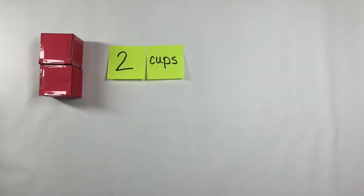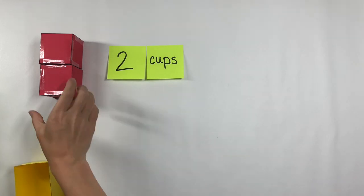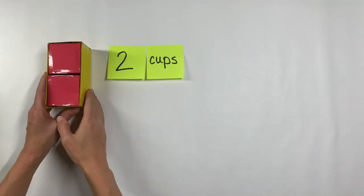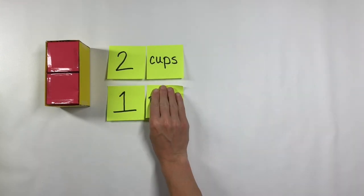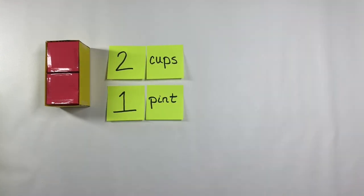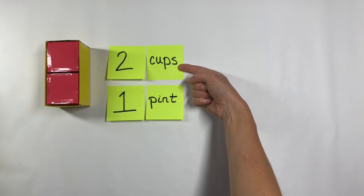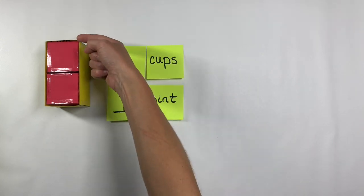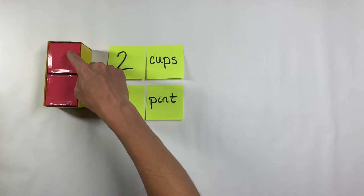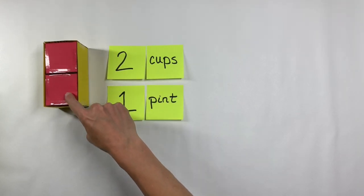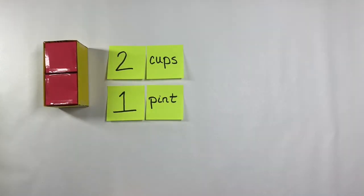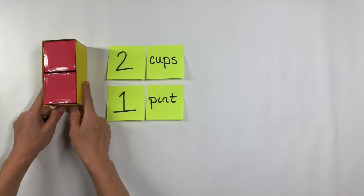But when you ask them for a second way to describe this same quantity, hopefully it's not too big of a stretch for them to say, well, that's the same as one pint. We want to use this as a starting point for establishing that we can describe the same amount in different ways if we choose different units to do the measuring. This is the same quantity. We can either use cups to measure it, and if we use cups, we need two of them. But if we use pints to measure it, we only need one.